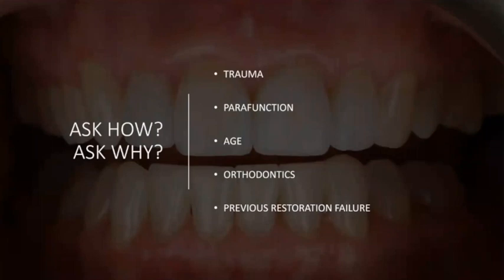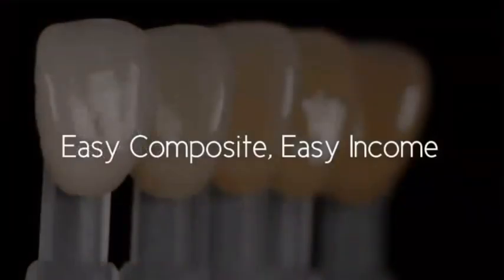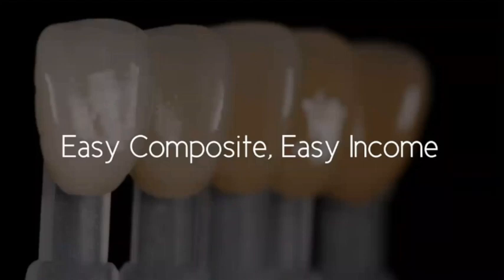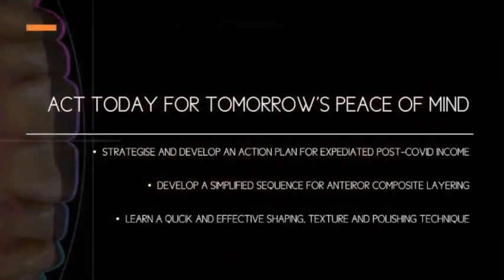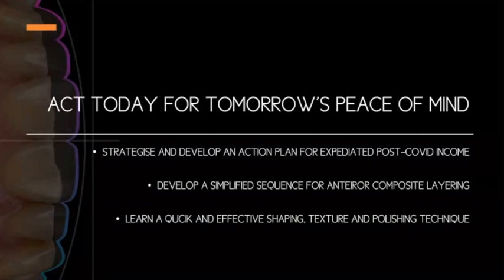Always think about these factors — always ask how they got into the situation and why they're presenting the way they are. Today we're not dealing with full-mouth rehabilitations; we're talking about easy composite and easy income to help us get back on our feet. We've got potentially three months where we're not earning, yet bills are still coming — mortgages, food, everything. So we need to come back stronger, better prepared, and ready to go.